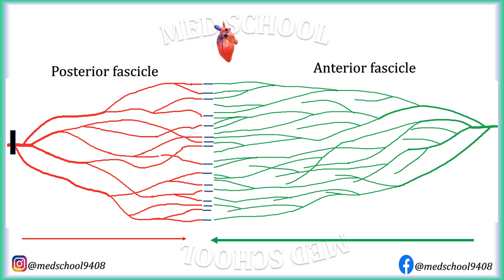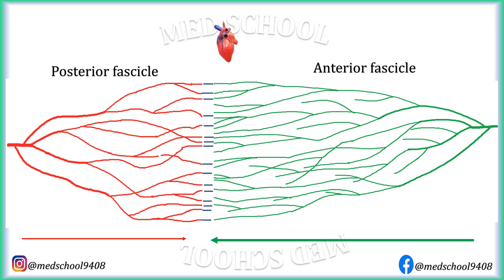When the posterior fascicle is blocked, the impulse first travels through the anterior fascicle, then through the distal anastomosis, and travels through the posterior fascicle in retrograde direction — that is, opposite to the normal direction. Similarly, when the anterior fascicle is blocked, the impulse travels through the posterior fascicle first, then through the distal anastomosis, and travels through the anterior fascicle in retrograde direction.